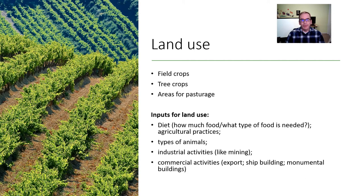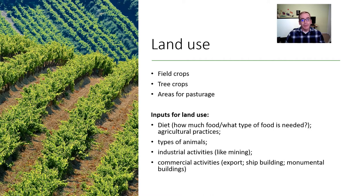Another thing that will really affect land use is what I call commercial activities. Items for export — where maybe you grow too much food and then you can export it somewhere else, or you're growing food primarily for export. Shipbuilding is another example — we'll talk about that, certainly when we get to Egypt. When they're starting to build ships, that's cutting down trees from somewhere, bringing them, and building the boats. And then lots of other commercial activities, like building large buildings and monumental architecture — like a pyramid. All those things go into thinking about how we use the land.